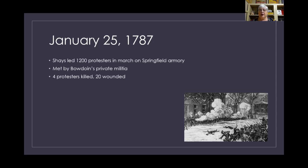All of this was happening, and the federal government — under the way the Articles of Confederation was written — could not send any troops. They had no national guard or any force they could send to get involved and make it stop. They had no way to intervene in Massachusetts. They could only sit there and say, 'Man, that's bad, we wish that would stop,' but they had no power to do anything.